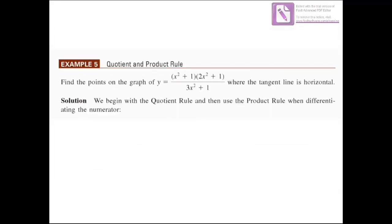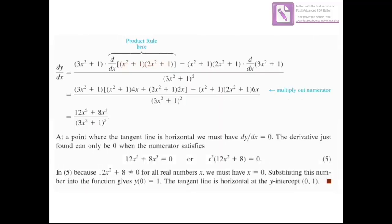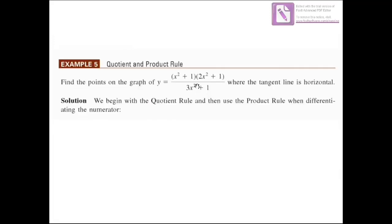Example 5 combines the quotient and product rules. Find the points on the graph of y = [(x² + 1)(2x² + 1)] / (3x² + 1) where the tangent line is horizontal. Since the tangent line is horizontal, that means the derivative equals 0. We apply the quotient rule: differentiate the numerator (x² + 1)(2x² + 1) using the product rule, multiply by (3x² + 1), minus the numerator times the derivative of (3x² + 1).